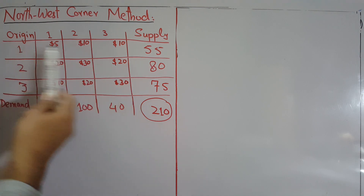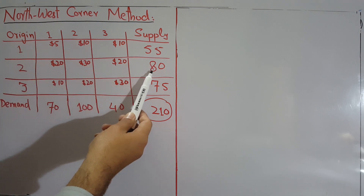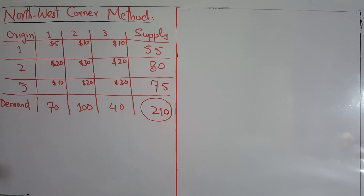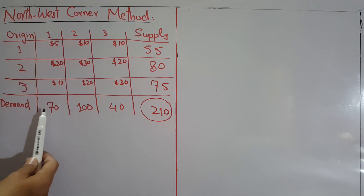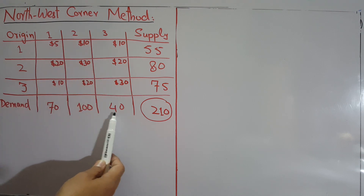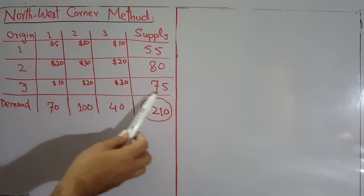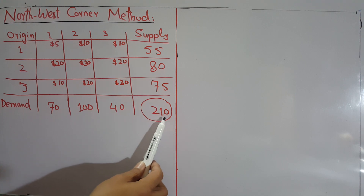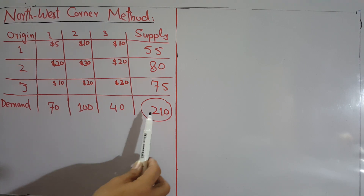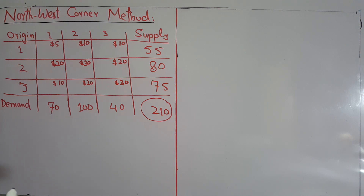The supply for the first origin is 55, for the second is 80, and for the third is 75. The demand for destination 1 is 70, for destination 2 it's 100, and for destination 3 it's 40. If you add the supply, it gives 210, and if you add the demands, it's also 210. These kinds of problems are called balanced transportation problems.